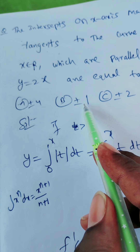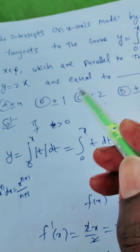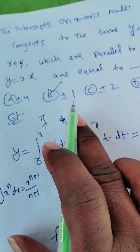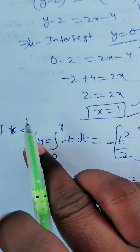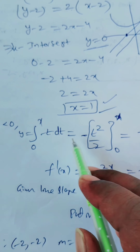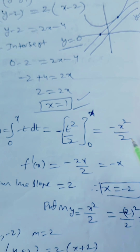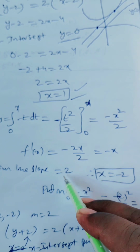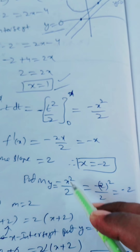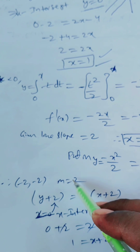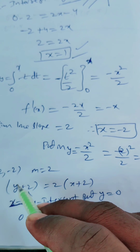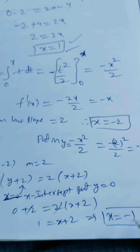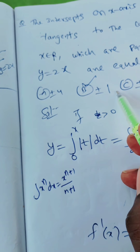So the x-intercept is 1, and the options include plus or minus 1. To understand why we also get minus 1, consider the mod symbol. For t less than 0, mod t equals minus t, so integrating from 0 to x gives minus x²/2. The differentiation is minus x, and setting minus x equal to 2 gives x equal to minus 2, y equal to minus 2. Substituting into the tangent equation and putting y equal to 0, we get x equal to minus 1. Therefore the x-intercept is plus or minus 1. Thank you so much.